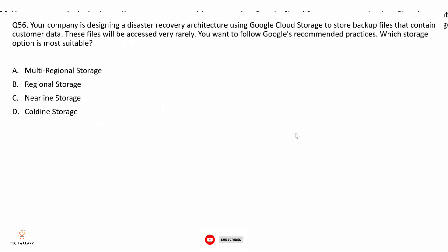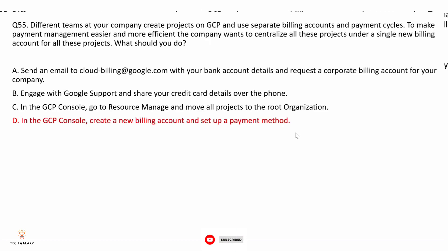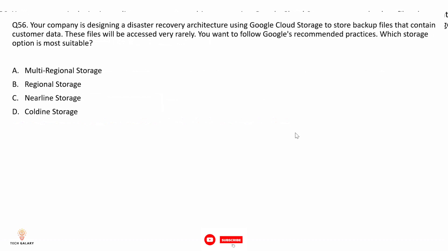Question 56: Your company is designing a disaster recovery architecture using Google Cloud Storage to store backup files that contain customer data. These files will be accessed very rarely. You want to follow Google's recommended practices. Which storage option is most suitable? The correct answer is option D: Coldline storage.